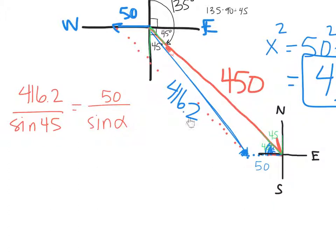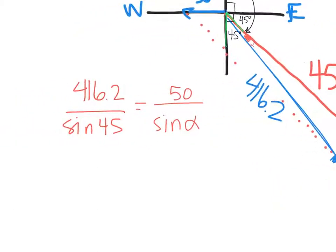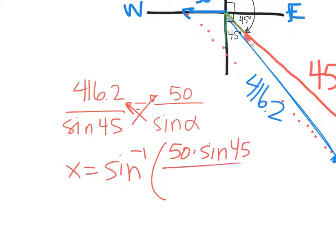So if I use the law of cosines to figure out what the resultant is I use the law of sines to find that angle. Okay so cross multiplying here I'm going to take the inverse sine eventually of 50 times sine of 45 divided by 416.2.